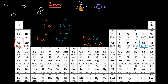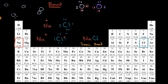Now this oxygen on the left, in order to become more stable, it would love to somehow gain or maybe share two more electrons. And of course this oxygen on the right, it's still oxygen — it also would love to gain or share two more valence electrons. So what if the oxygen on the left shared this electron and this electron with the oxygen on the right, and the oxygen on the right shared this electron and this electron with the oxygen on the left?